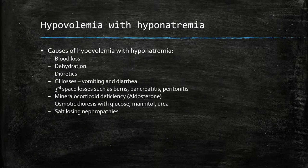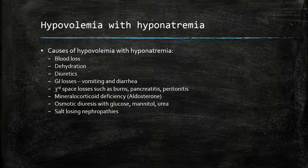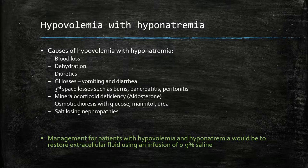Causes of hypovolemia with hyponatremia include blood loss, dehydration, and diuretic use. GI losses such as vomiting and diarrhea can also cause this, as can third space losses such as burns, pancreatitis, and peritonitis. Aldosterone deficiency, osmotic diuresis with glucose, mannitol, urea, and salt-losing nephropathies can also cause this. Managing patients with hypovolemia and hyponatremia involves infusing with 0.9% saline to restore extracellular fluid.